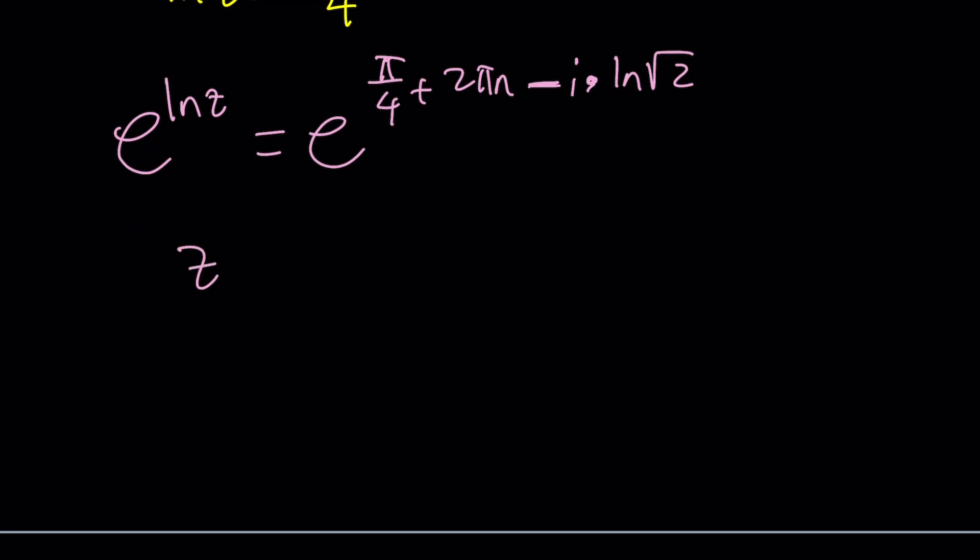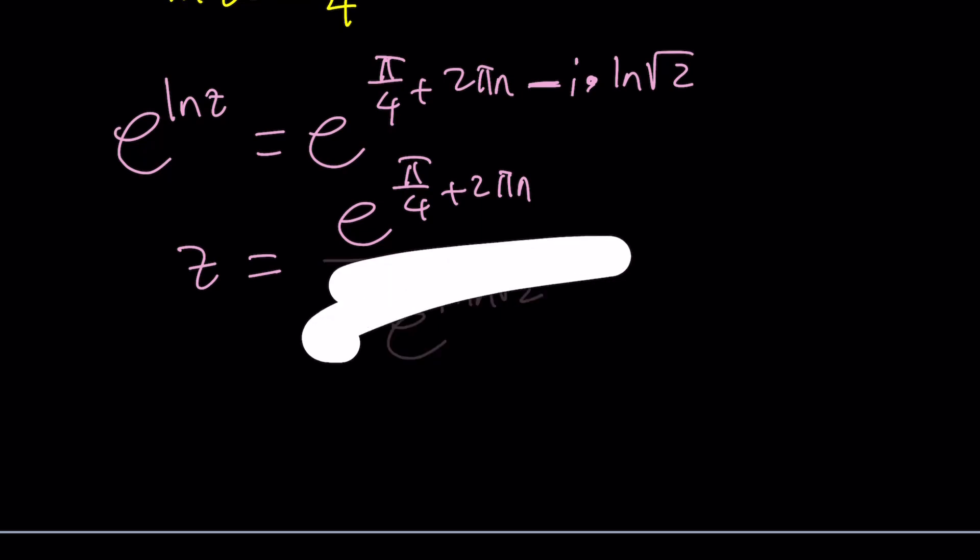Now we do have a minus sign here that means we can kind of divide so we can kind of write this as z. E to the ln z is z. This will become e to the power pi over 4 plus 2 pi n divided by e to the power i times ln root 2. Obviously there's another way to approach this which is probably a little better.